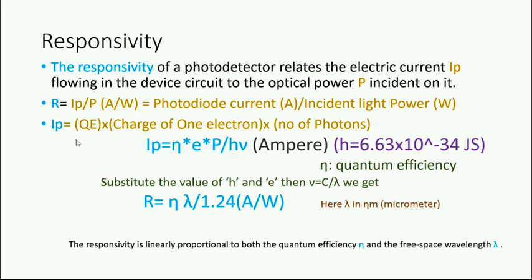The photo current Ip is equal to the quantum efficiency - a new word is coming, quantum efficiency - times the charge of one electron times the number of photons. These quantities contribute to the photo current Ip. Number of photons is total energy divided by photon individual energy. Total energy by individual energy gives you the number of photons.